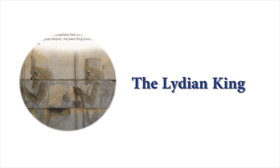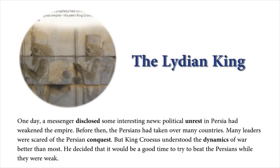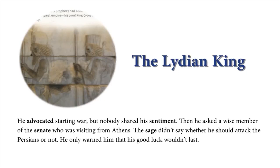The Lydian King. King Croesus was once one of the richest kings in the world. He ruled over Lydia, an ancient empire located near modern-day Turkey, and controlled a valuable commodity — gold. Many people were very envious of him. One day a messenger disclosed some interesting news: political unrest in Persia had weakened the empire. Before then, the Persians had taken over many countries. Many leaders were scared of the Persian conquest. But King Croesus understood the dynamics of war better than most. He decided that it would be a good time to try to beat the Persians while they were weak. He advocated starting war, but nobody shared his sentiment. Then he asked a wise member of the senate who was visiting from Athens. The sage didn't say whether he should attack the Persians or not. He only warned him that his good luck wouldn't last.